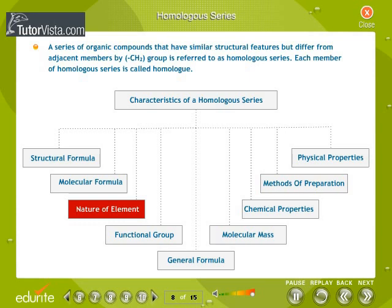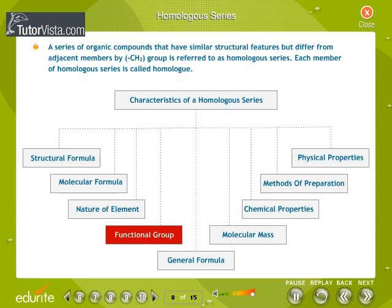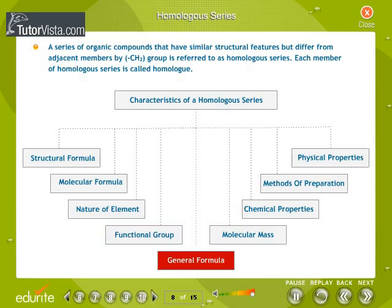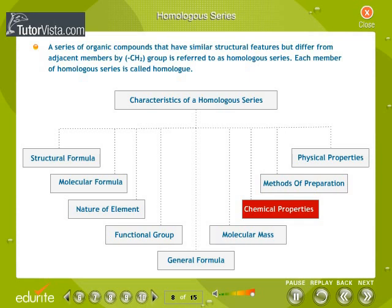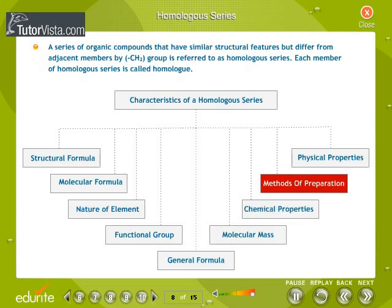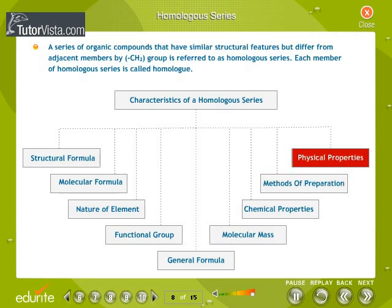All the members of the series have the same type of elements. All the members of a homologous series contain the same functional group. Members of a homologous series can be represented by a general formula. The molecular mass of any two consecutive members differs by 14 units. All the members of a homologous series have the same chemical properties due to the same functional group. Generally, all the members of a series can be prepared by using the same method. Physical properties of the members of a homologous series vary with the increase in atomic weight.